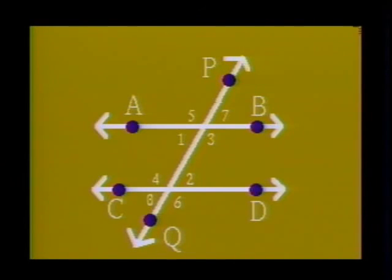It is also true that if two lines are cut by a transversal and alternate interior angles are congruent, or alternate exterior angles are congruent, or corresponding angles are congruent, then we can conclude that the lines are parallel.